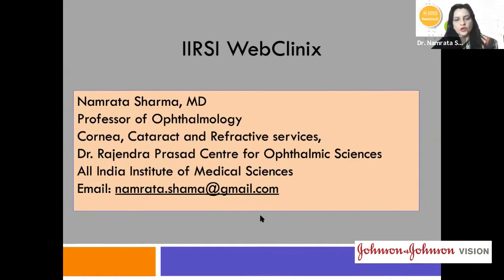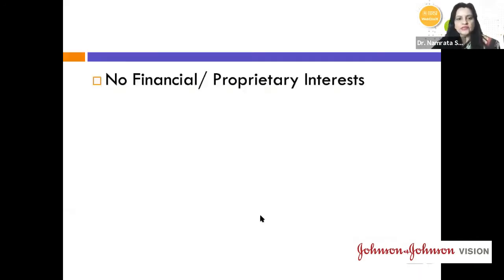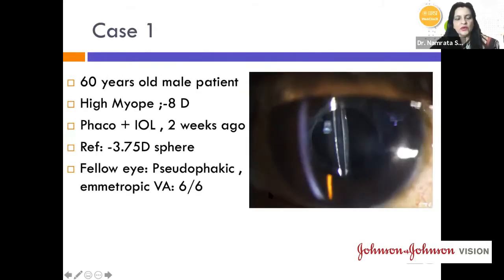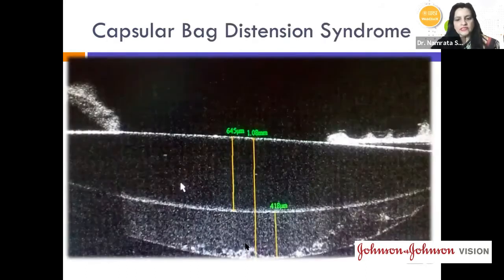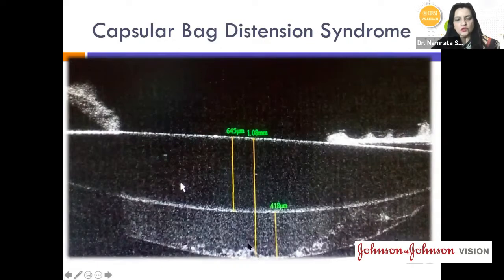Dr. Namrata Sharma presents case one: a 60-year-old high myope at minus 8 diopters who had phaco and IOL two weeks ago, now presenting with refraction of minus 3.75 sphere in the operated eye along with capsular phimosis. The fellow eye is pseudophakic and emmetropic at 6/6. Anterior segment OCT clearly shows capsular bag distension syndrome, with fluid accumulated at the posterior capsule that appears slightly opalescent or milky.